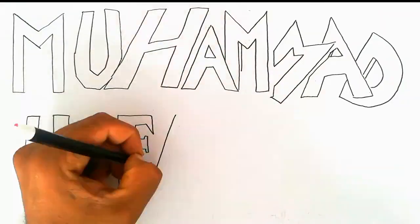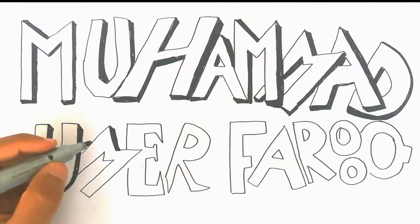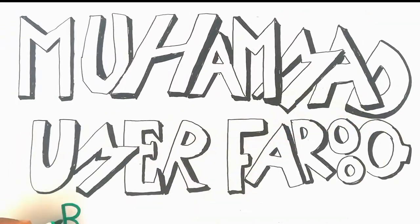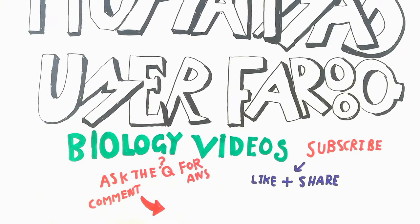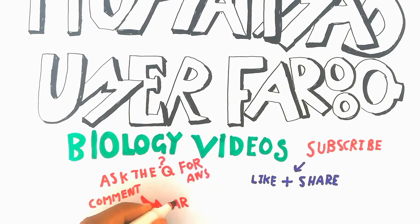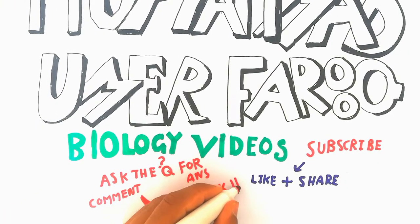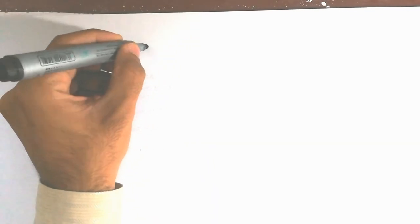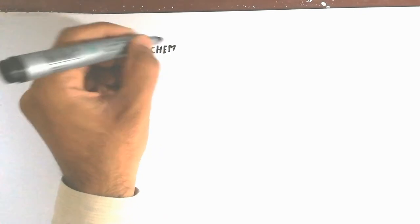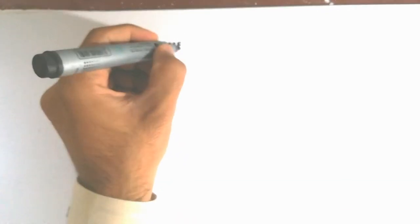Welcome to Muhammad Umar Farooq's biological video. Please subscribe, like, and share, and feel free to ask questions in the comments. In this video, we will talk about the Z scheme electron transport chain, which is present in plants and not in animals. The meaning of Z scheme will be discussed step by step.